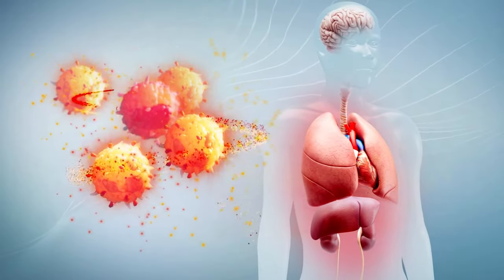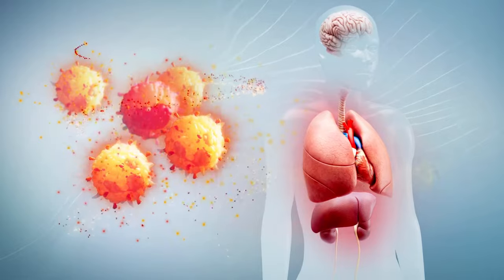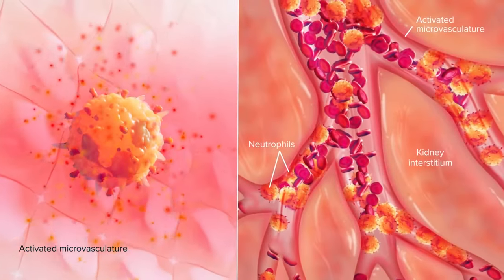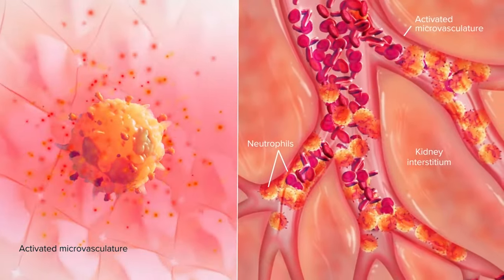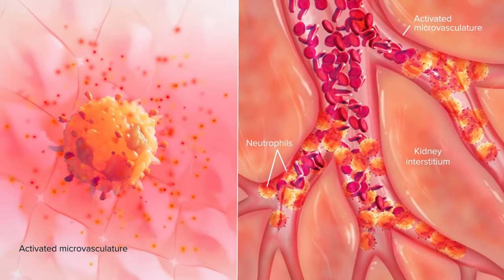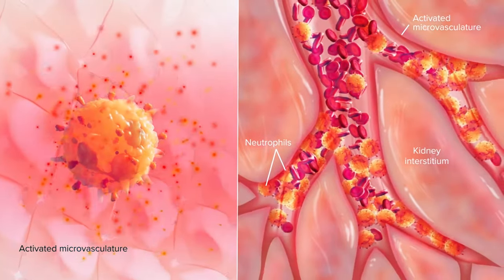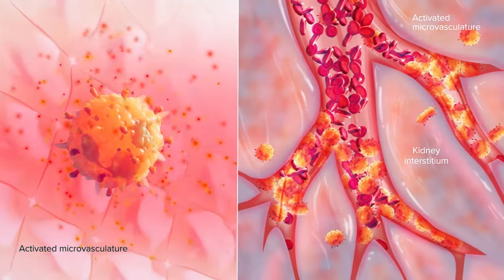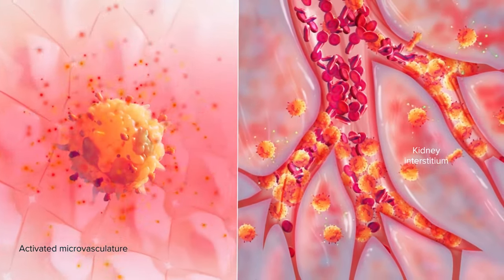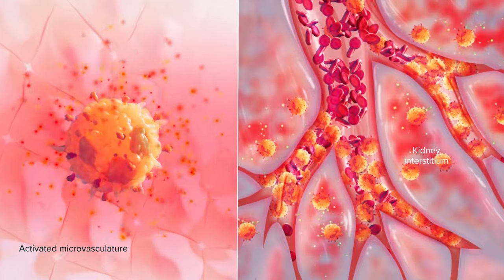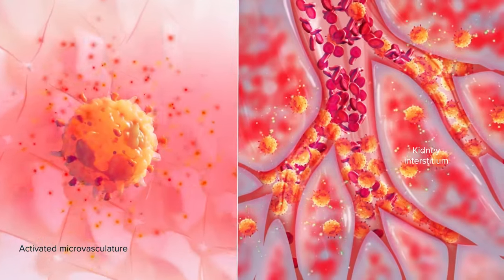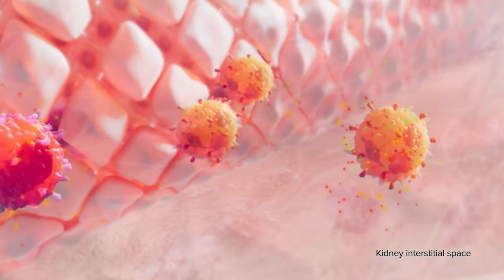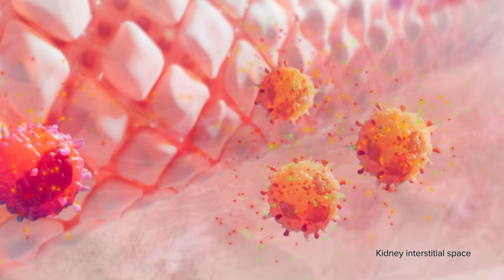Leukocyte activation contributes to the pathophysiology of acute kidney injury, including kidney tissue damage. Activated neutrophils, for example, aggregate in the blood vessels, causing sludging in renal blood flow, leading to ischemia due to poor circulation. Activated neutrophils then egress from the leaky blood vessels and move into the kidney interstitial space, releasing degradative enzymes. Together, these processes cause kidney tissue damage.